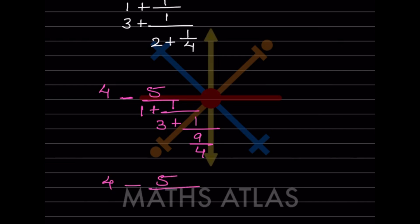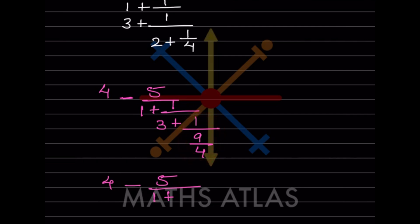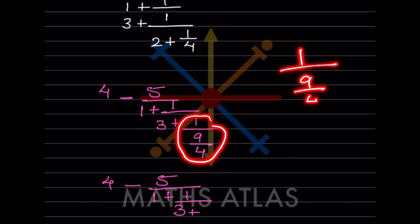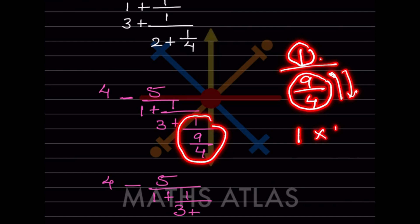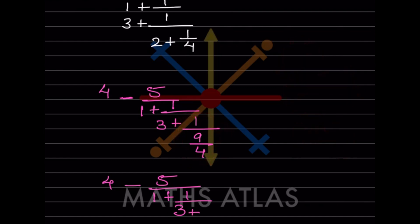Again, we write the top part the same and concentrate on this part. We can write 3 plus... now look: 1 divided by 9/4 means 9/4 is in the denominator, so we flip it. The numerator stays as it is, the denominator gets flipped over, giving us 4/9.